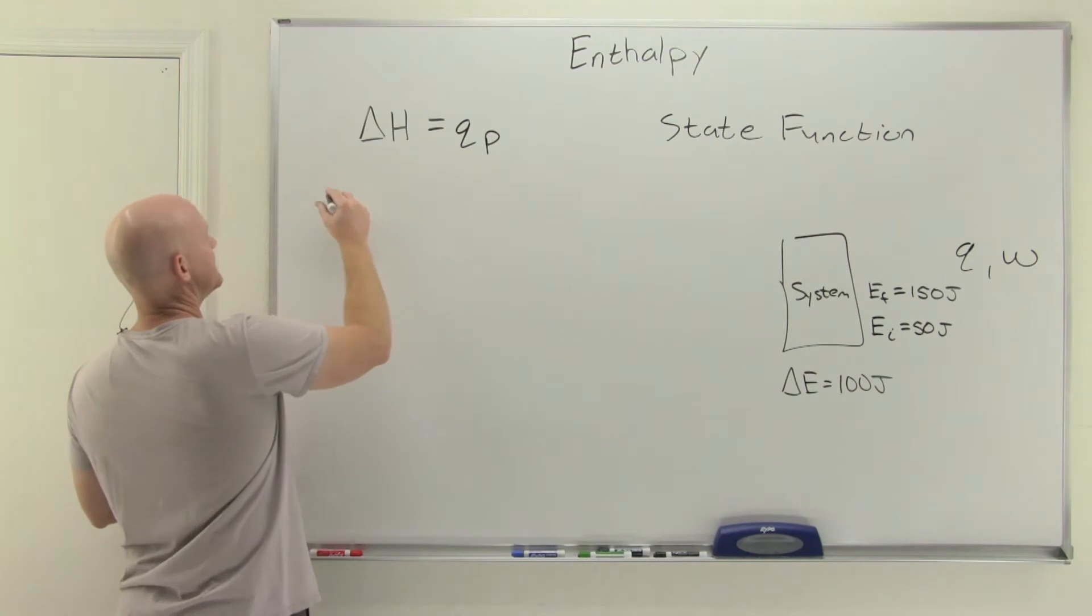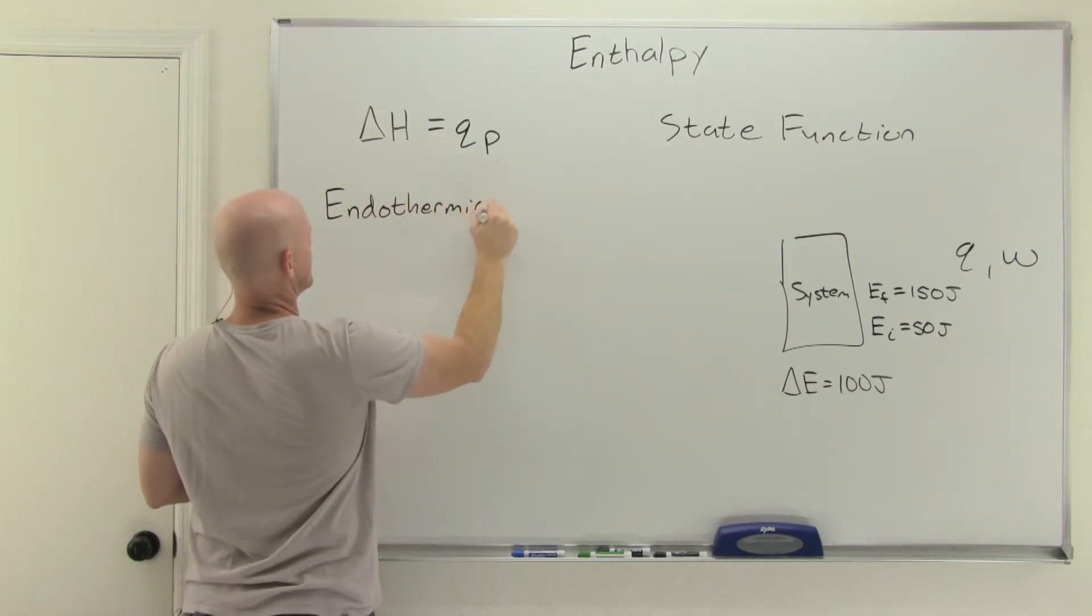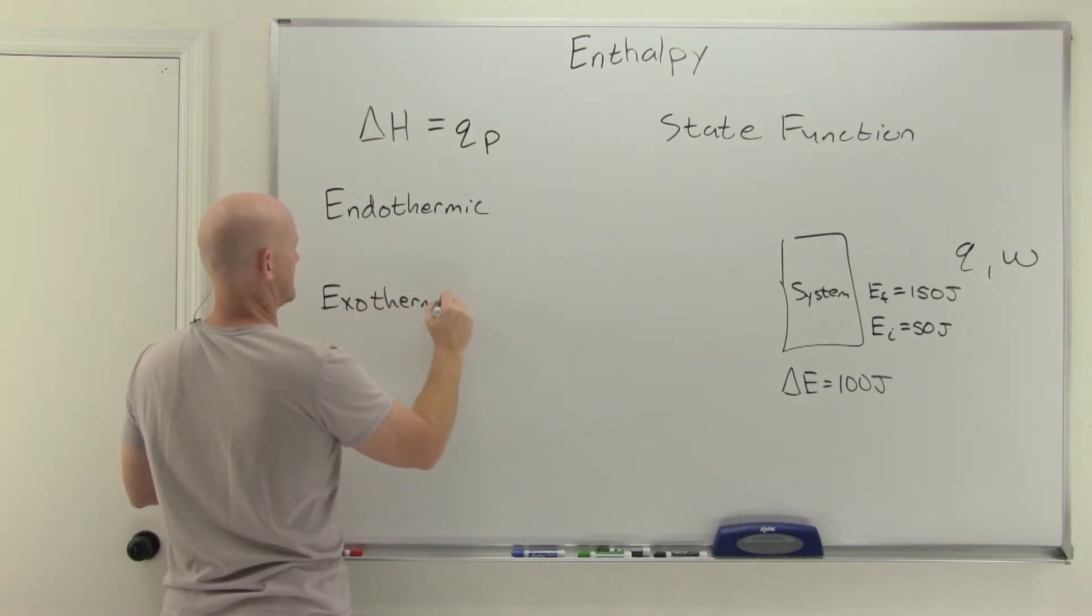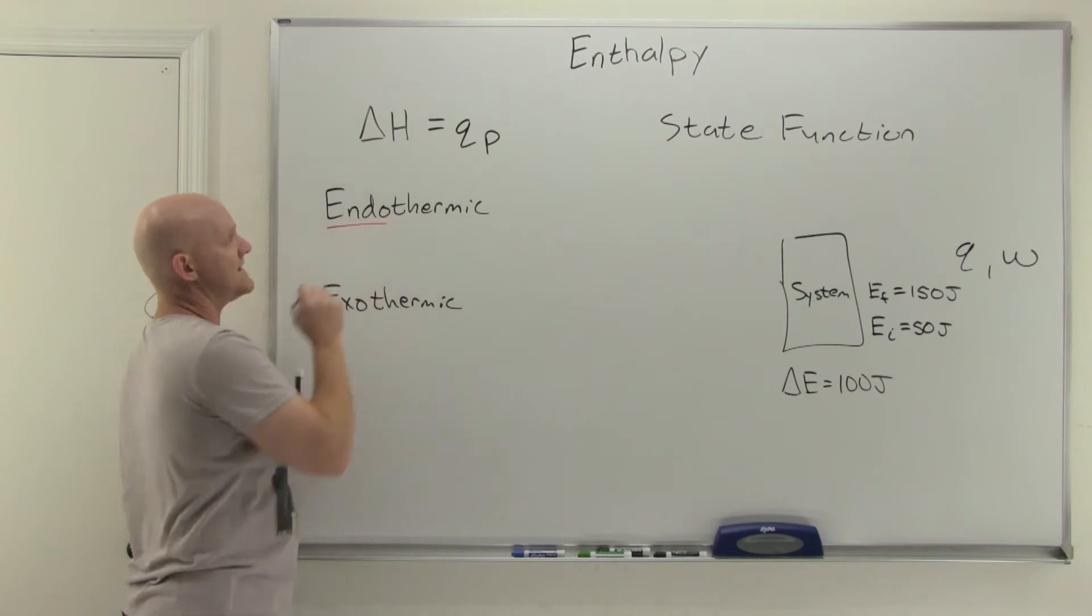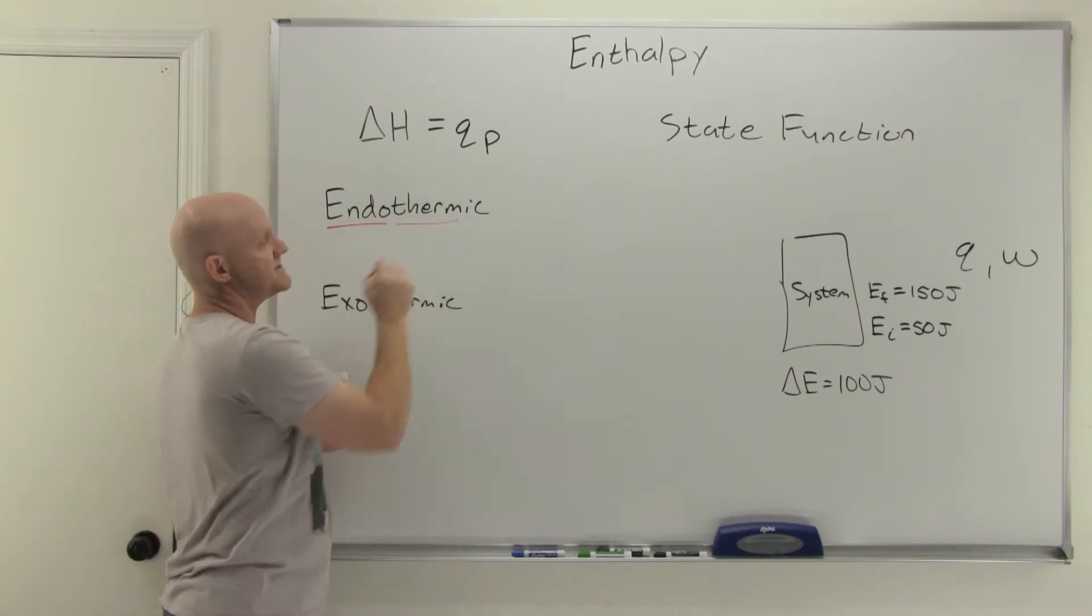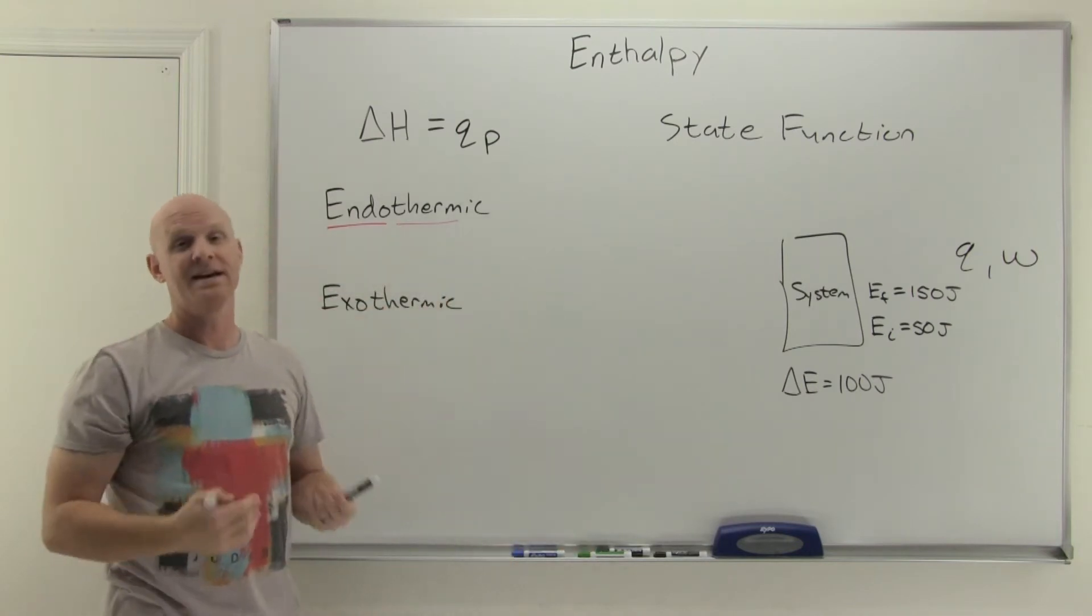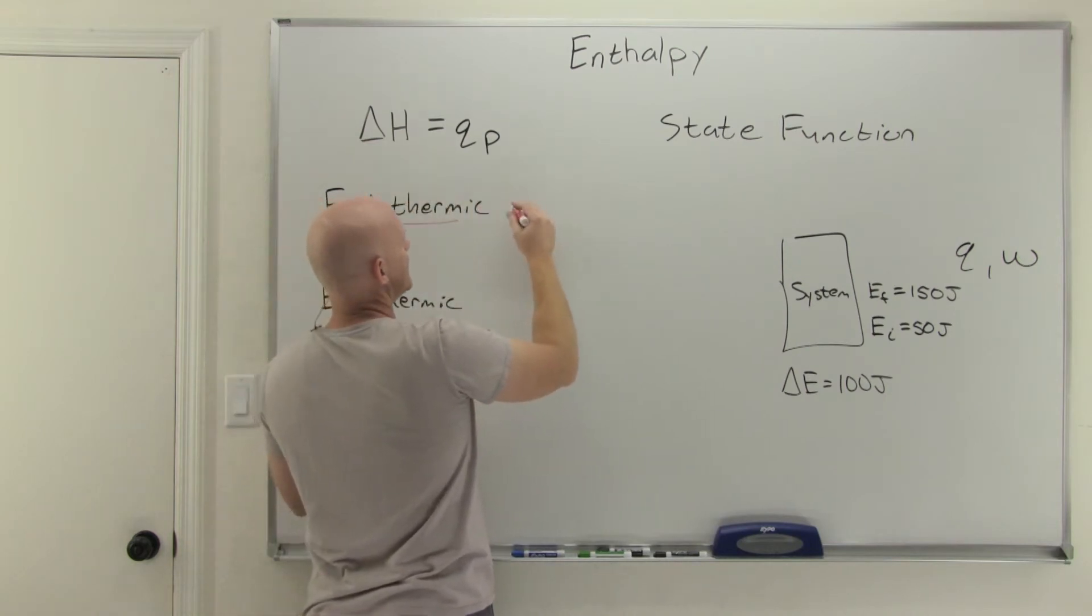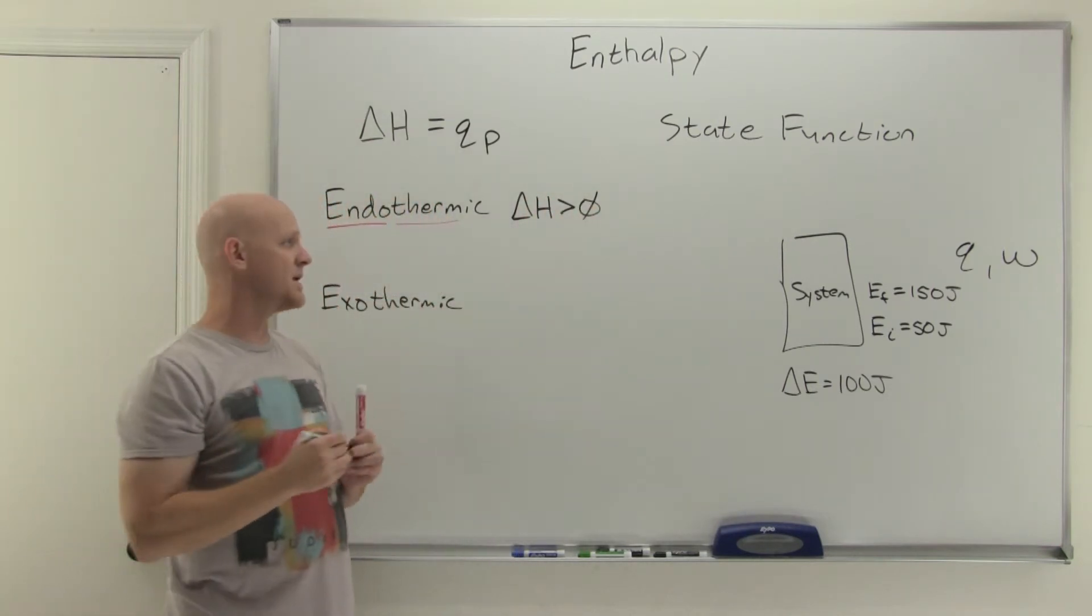We've got a couple of new terms to define here: endothermic and exothermic. You can kind of even reason out the words. Endo means inside and therm deals with heat. Endothermic means the system is taking heat inside of it, gaining the heat. If it's gaining the heat, then it's gaining enthalpy as well. We define endothermic as any reaction where delta H is positive. I write greater than zero as a way of representing positive.